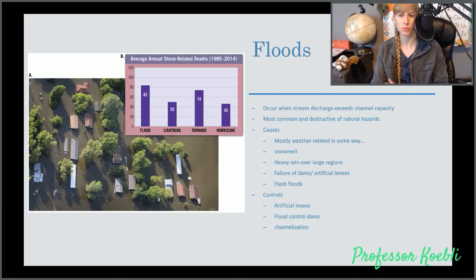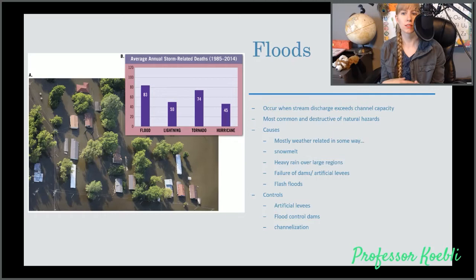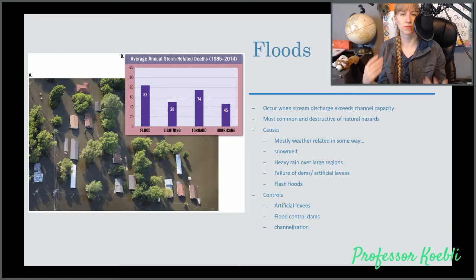Controls for floods are artificial levees, flood control dams and channelization. Floods are generally due to weather, but flash floods also occur, which is determined by geographic region. Flash floods are generally the most common in arid areas like deserts because the soil is so dry it ends up waterproofing itself. Just like your raincoat water will bead up and fall off. That's exactly what happens on dry sandy soil. It beads up and just runs off.